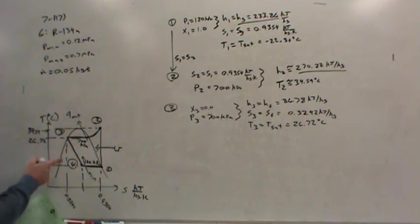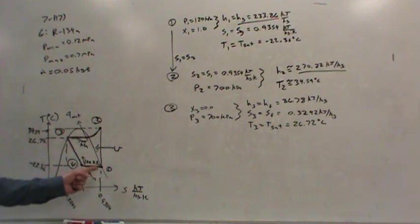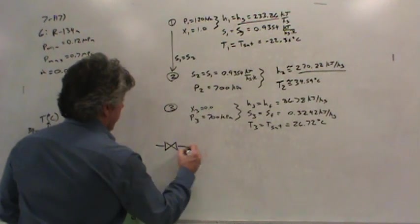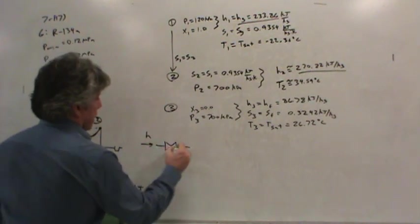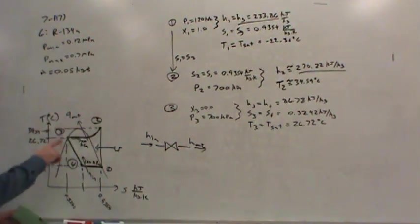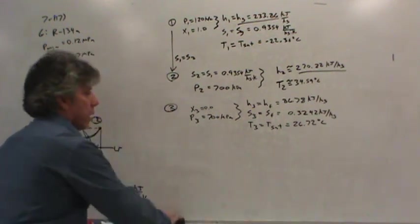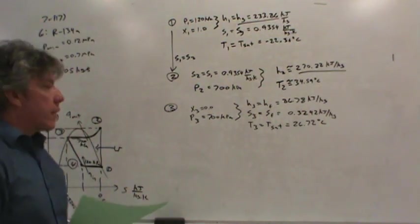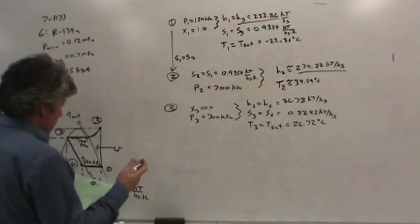From state three to state four, notice the entropy increases. This is not isentropic like the compressor. This is the throttling valve. What do we know about throttling valves? The enthalpy that comes in equals the enthalpy that leaves. That's the key process knowledge. The TS diagram does not show it, but the pH diagram for a standard vapor compression refrigeration cycle does.